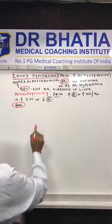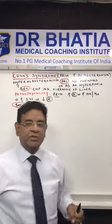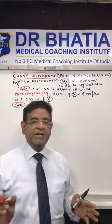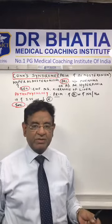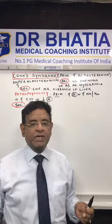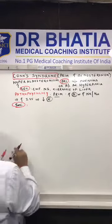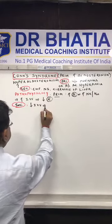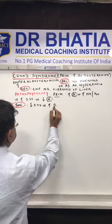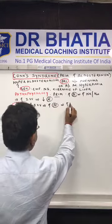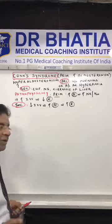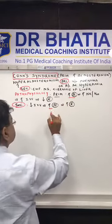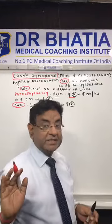Secondary occurs in CHF, nephrotic syndrome, and cirrhosis of the liver. In these conditions, fluid leaks out of the vasculature, so intravascular volume is reduced, leading to increased aldosterone and increased renin level. To note: in both primary and secondary, aldosterone level is increased, but in secondary, renin level is also increased.